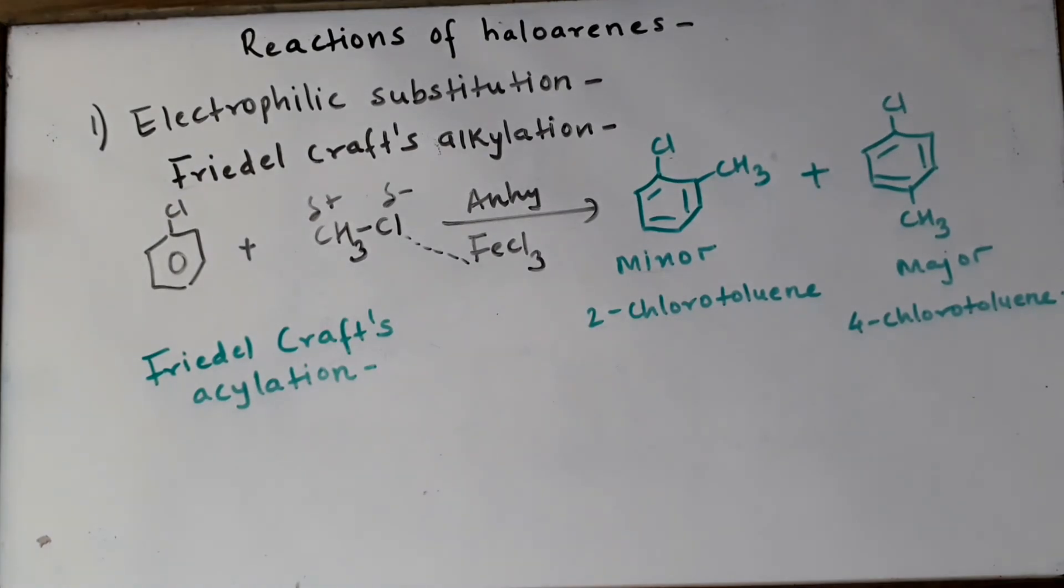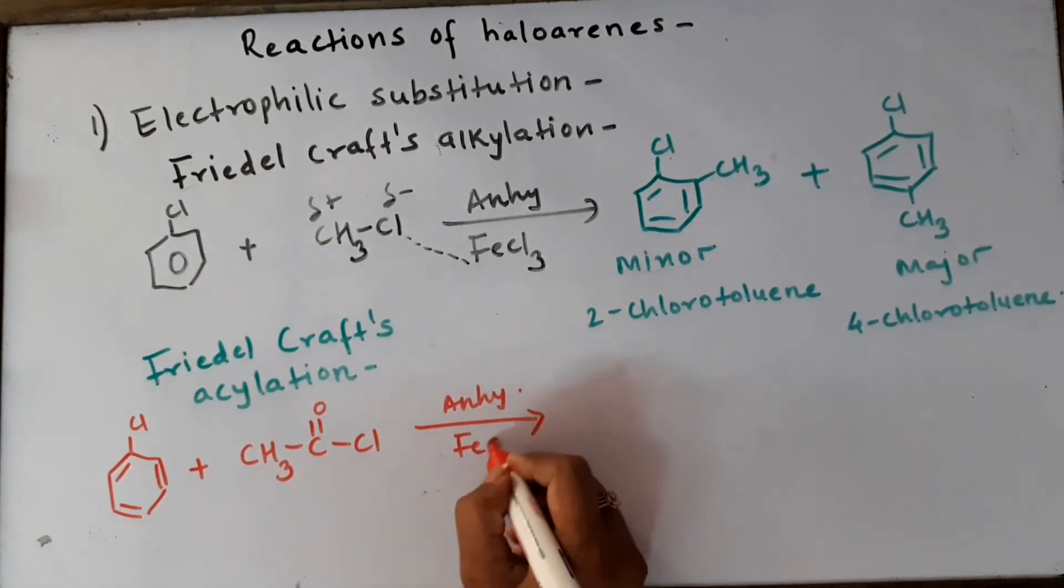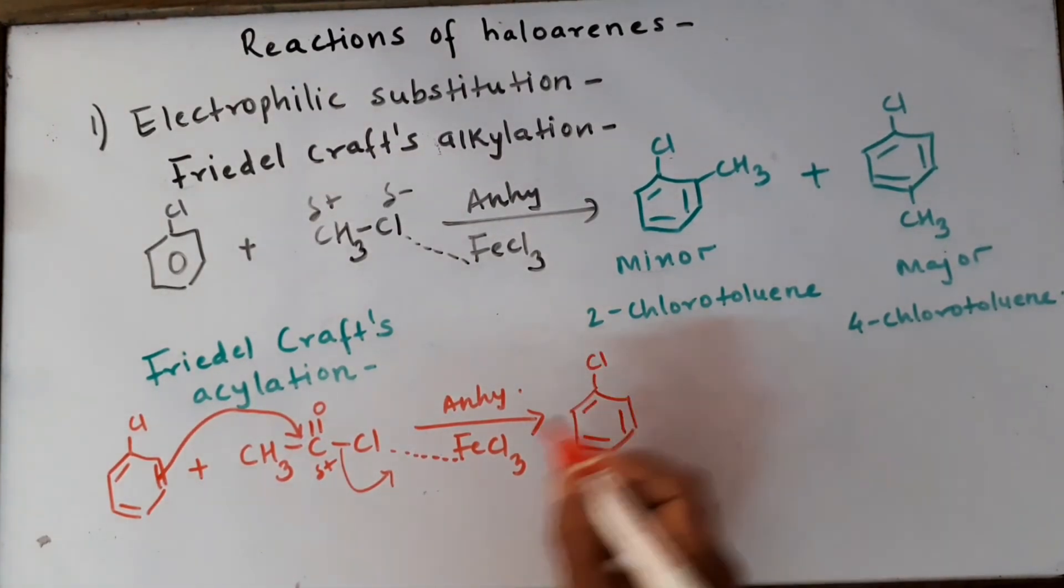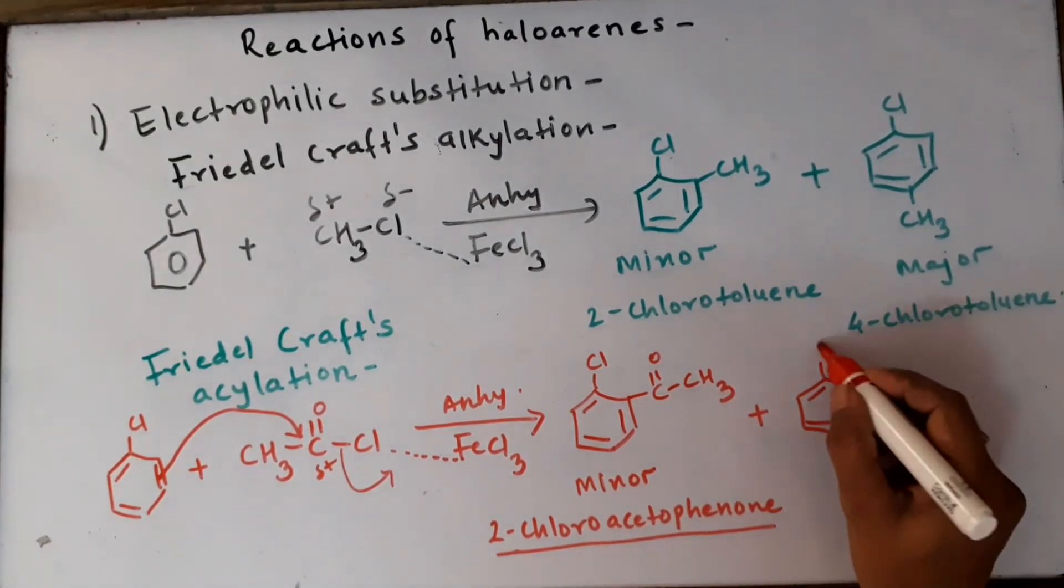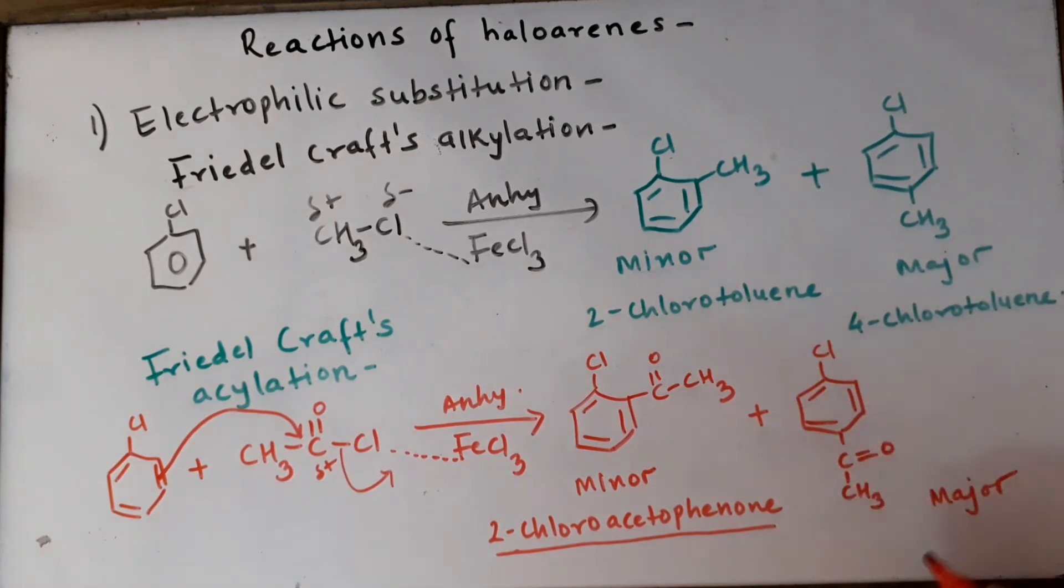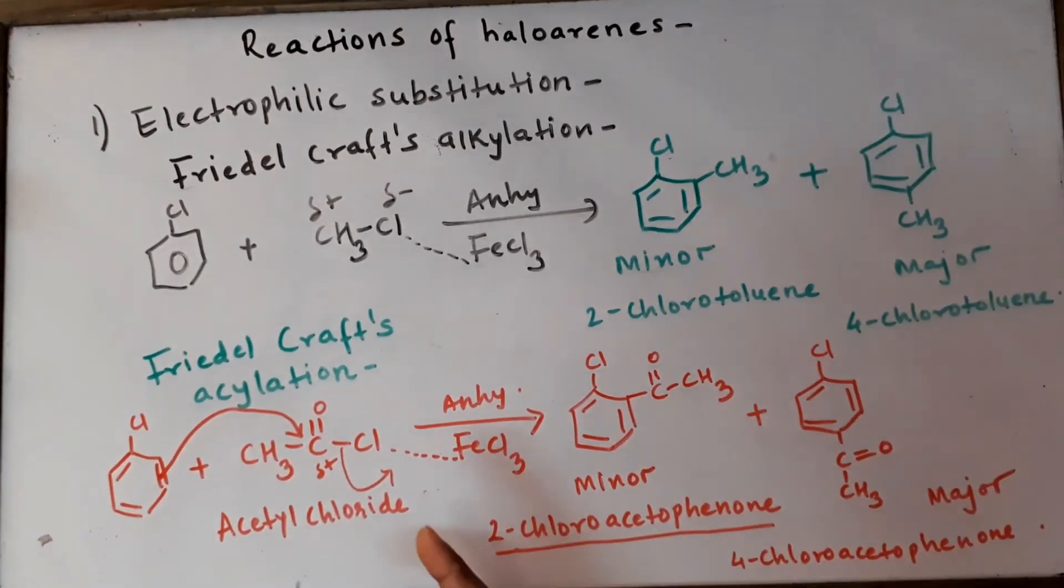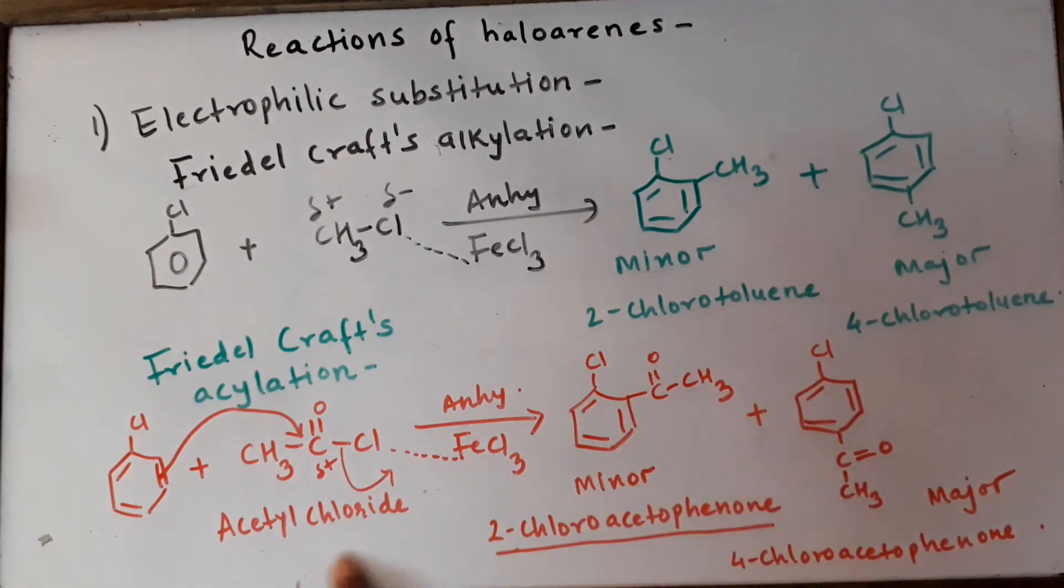Similarly we can have a look at Friedel-Crafts acylation, where we treat chlorobenzene with acetyl chloride in the presence of anhydrous FeCl3. Ortho attack takes place to give you 2-chloroacetophenone as a minor product, and the para attack also takes place to give you 4-chloroacetophenone. In this manner we have seen that Friedel-Crafts alkylation and acylation will give you two products.